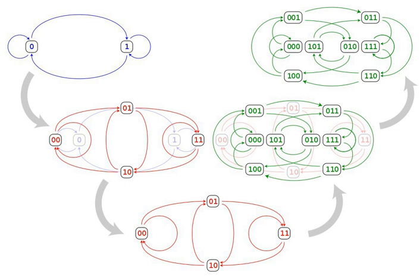Hassler Whitney proved that with one exceptional case, the structure of a connected graph G can be recovered completely from its line graph. Many other properties of line graphs follow by translating the properties of the underlying graph from vertices into edges, and by Whitney's theorem the same translation can also be done in the other direction. Line graphs are claw-free, and the line graphs of bipartite graphs are perfect.